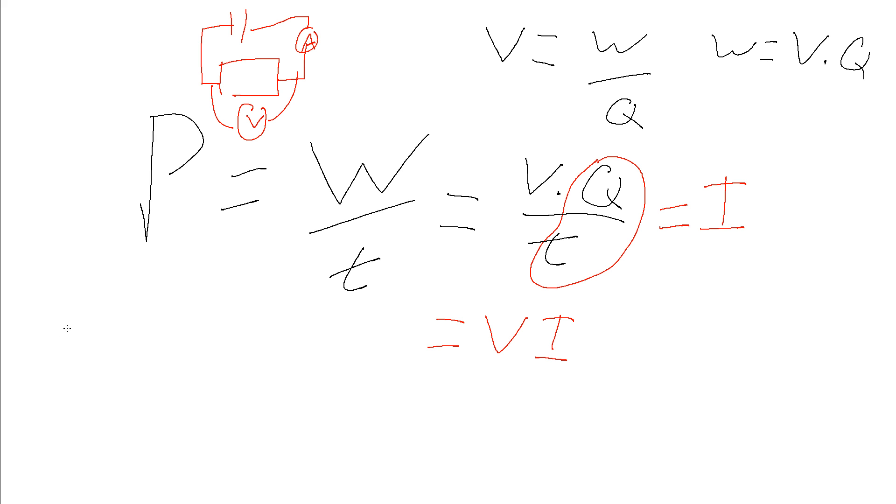But we can combine this with Ohm's law which says V equals IR. So we can substitute instead of V, we can put IR. And so if we do that, then what we get is P equals I times R times I, or better written I squared R. So this is another form of it, with this VI having been the original form that we started off with.